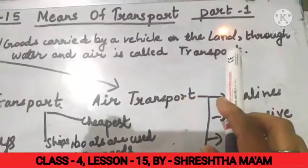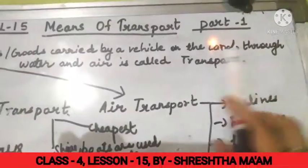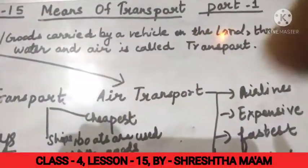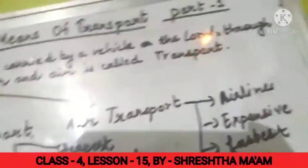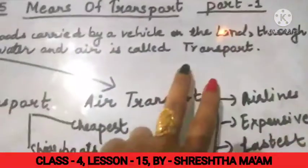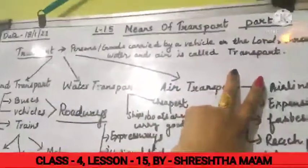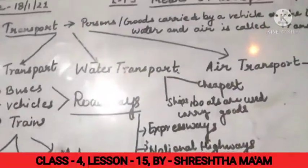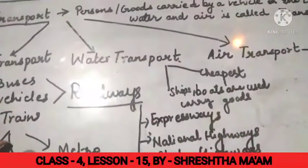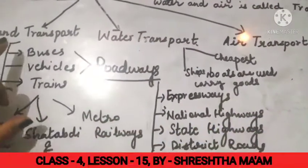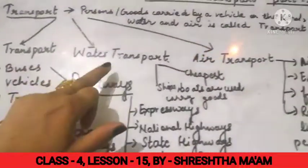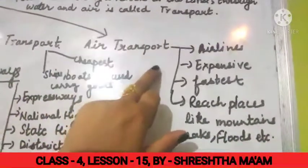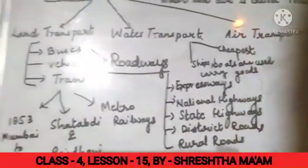Transport on land, through water, and through air is called transport. This transport is divided into three main parts: land transport, water transport, and air transport.